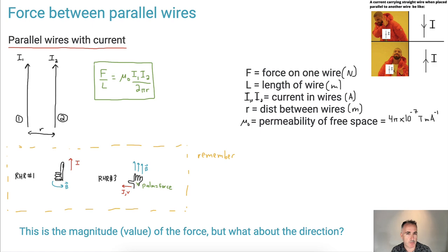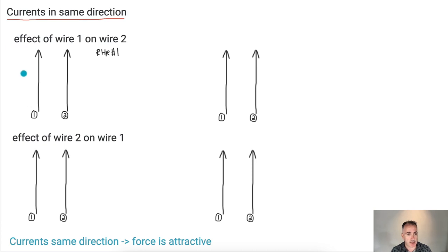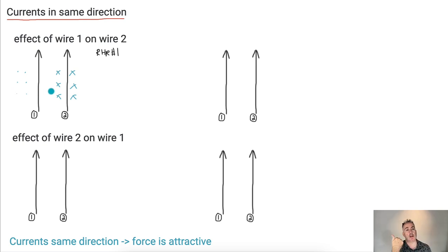So we've got two different cases. First, what if the currents are in the same direction? Let's look at what wire one does to wire two. I apply right-hand rule number one: put my thumb in the direction of the current, and my fingers curl in the direction of the magnetic field. We draw dots for field coming out of the page and X's for field into the page. With wire one's current going up, my fingers curl up on the left side and into the page on the right — so wire one causes a magnetic field into the page at wire two.